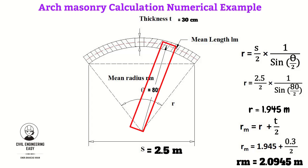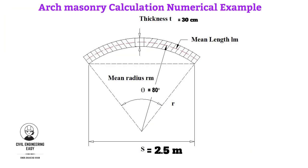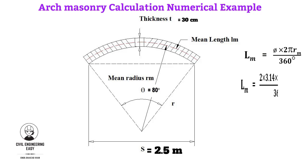The mean length equals 2π multiplied by the mean radius multiplied by theta divided by 360. So mean length equals 2 × (22/7) × 2.095 × 80 divided by 360. The mean length equals 2.93 meters.